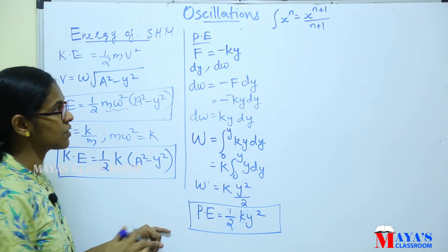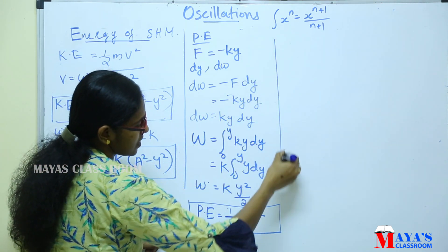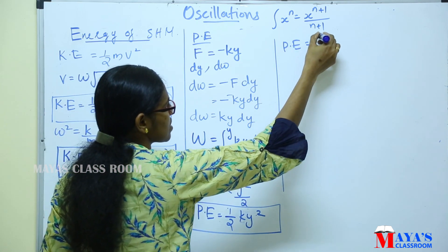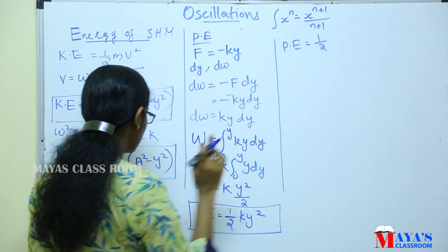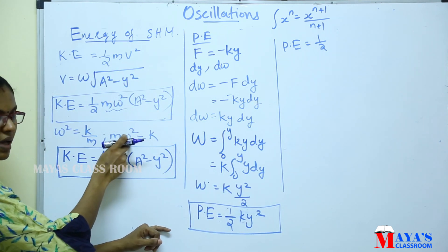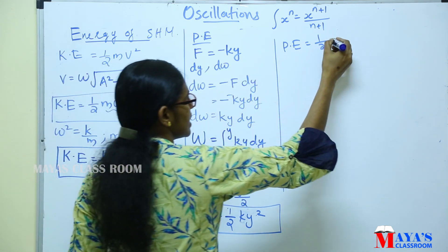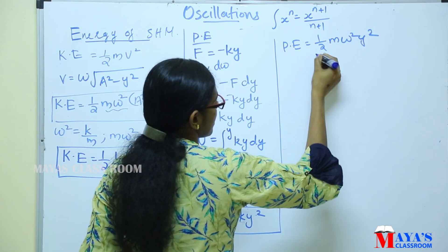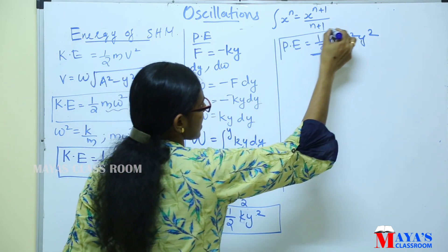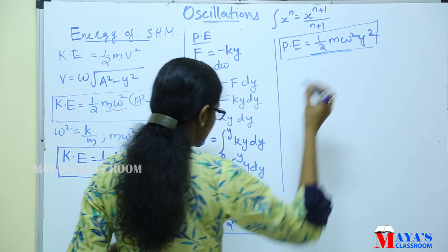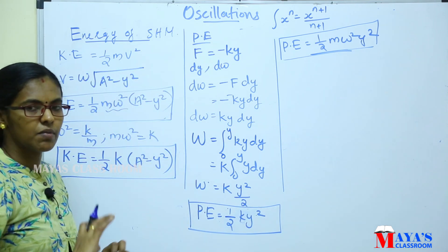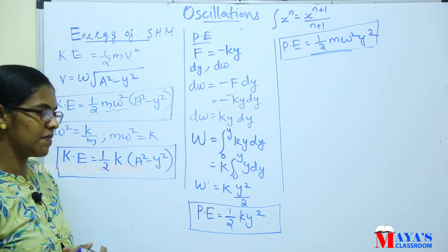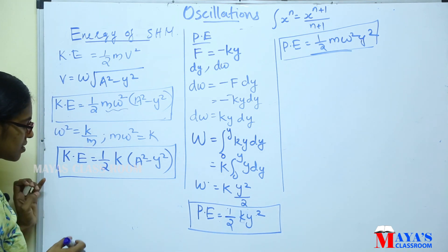Since k equals mω², we substitute: potential energy is equal to half mω²y². We need to find the potential energy and kinetic energy expressions in this case.